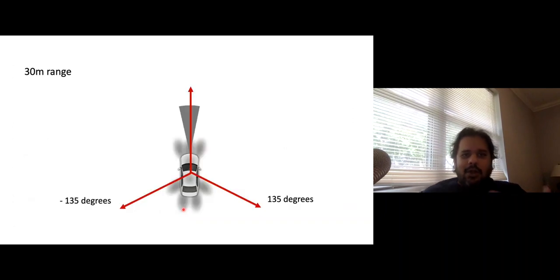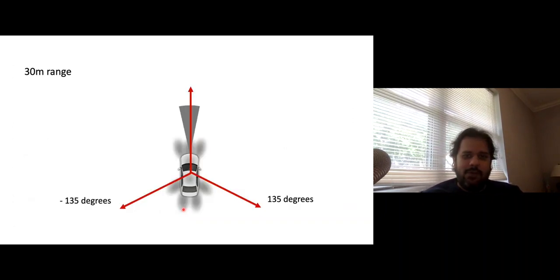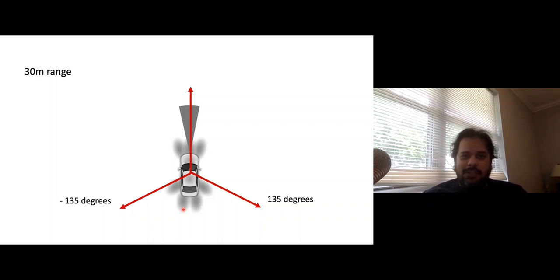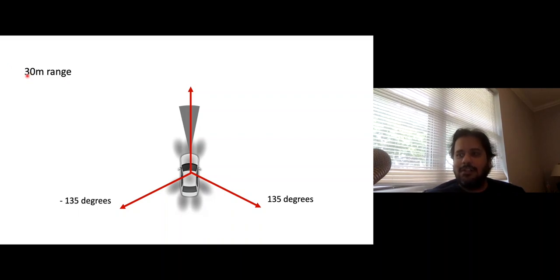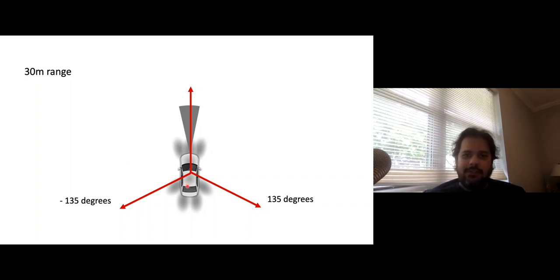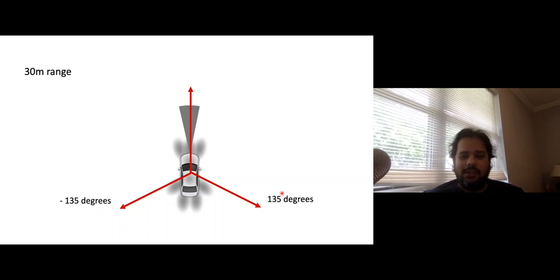Here are some important logistics to keep in mind. In the ROS F1/10 simulator, the virtual lidar is actually better than the physical one. It can see up to 30 meters — like a 30LX Hokuyo lidar. The field of view is 270 degrees, with rays in front corresponding to roughly 0 degrees, ranging from negative 135 to positive 135 degrees. The ranges vector typically starts from the left and goes to the right in the direction the lidar scans.